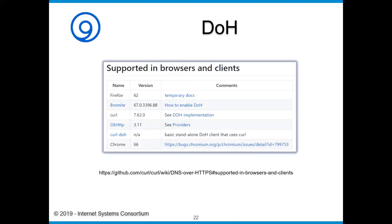A lot of major browsers — Firefox, Chrome, Bromite (a Chromium spinoff) — have built-in DOH now, each configured by the application either through user-visible settings or pre-configured defaults. This is where the politics come in — who do you trust, do you make it opt-in or opt-out? I'd rather not argue about that. There's an interesting browser and client list of DOH support.